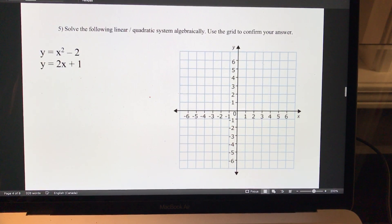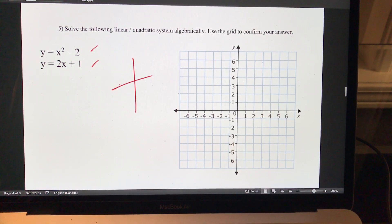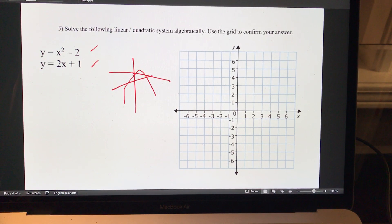Solve this linear quadratic system. The first one's a quadratic, the second one is a straight line. So remember, you have some kind of quadratic, you have some kind of straight line, and you should have two values where they cross.